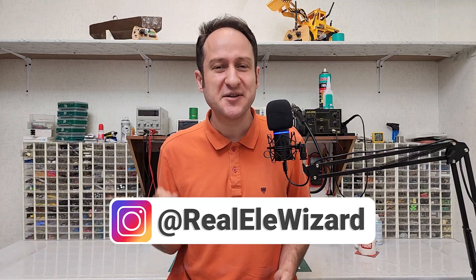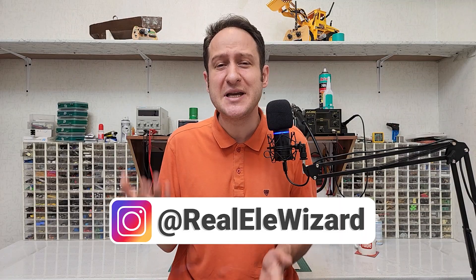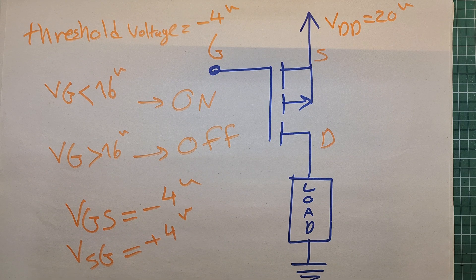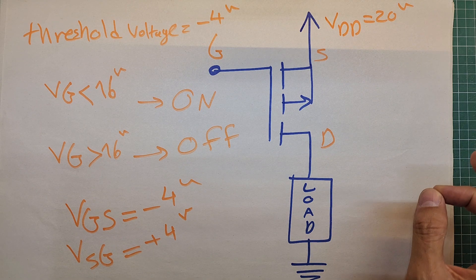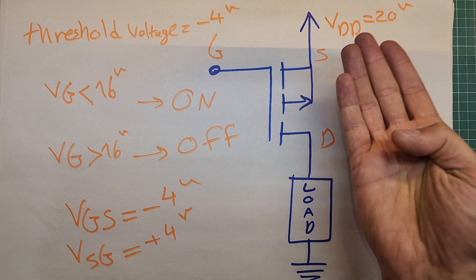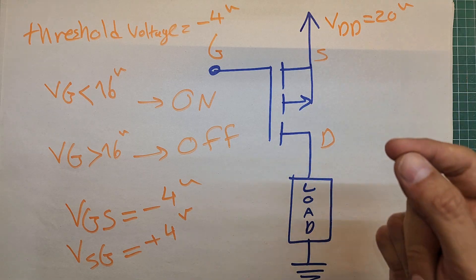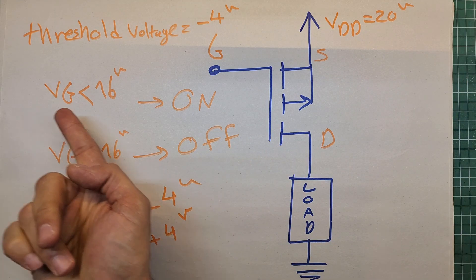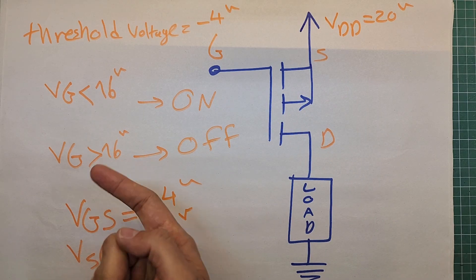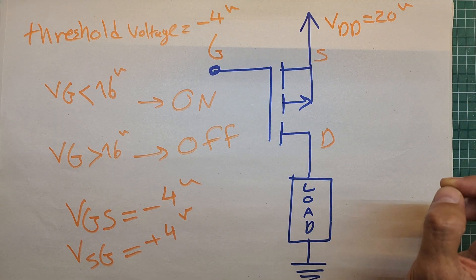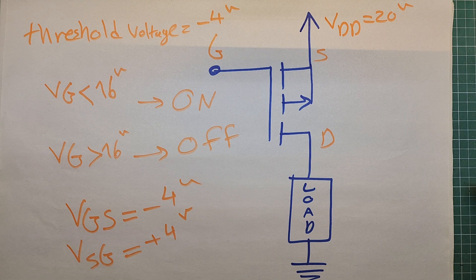The P-channel is also easy to understand — don't be put off by the negative voltage; it just shows relativity or polarity. When you apply minus 4 volts to the gate relative to the source, it also means applying positive 4 volts to the source relative to the gate. In simplified terms, apply a voltage 4 volts lower than the source voltage to the gate of a P-channel MOSFET to turn it on. The exact threshold voltage is determined in the datasheet.